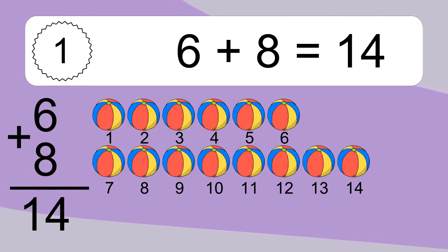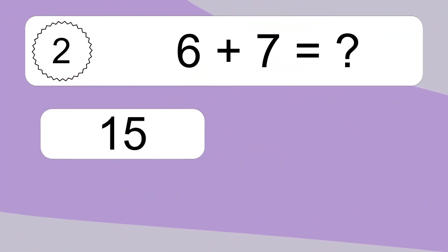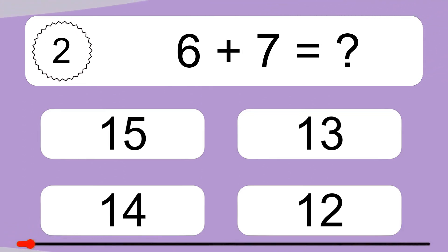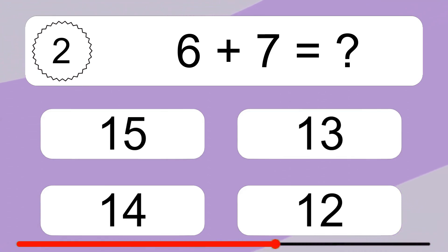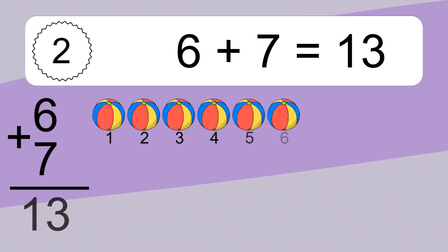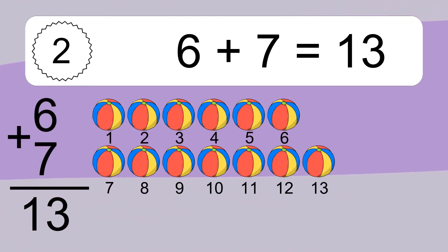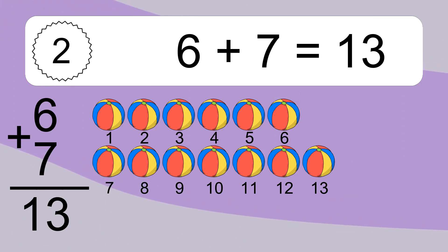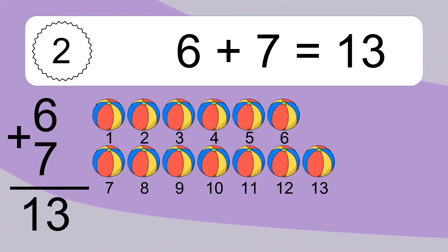...thirteen, fourteen. Six plus seven equals what? Six plus seven equals thirteen. Let's count it: one, two, three, four, five, six, seven, eight, nine, ten, eleven, twelve, thirteen.